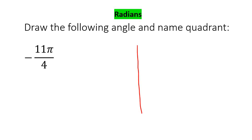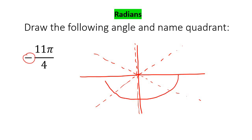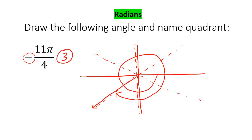Now we're going to go negative 11 over four pi. We break the quadrants up into four parts — that's just there and there, and we can use this line as one of them: one, two, three, four. We do it at the bottom as well because we're going to use 11. Going negative: one, two, three, four, five, six, seven, eight, nine, ten, eleven. So we're definitely going to be in quadrant three.